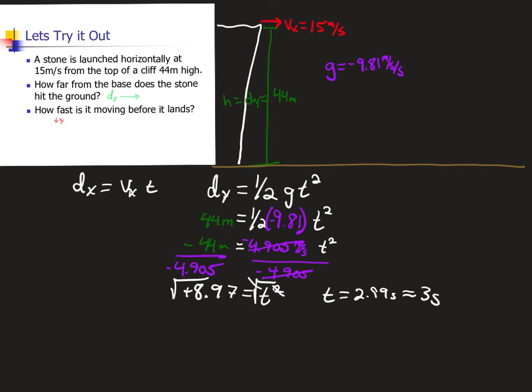Now we can take our three seconds and put it into d_x = v_x × t. Three times fifteen would be 45 meters. Now it's asking us how fast it's going at the very bottom.